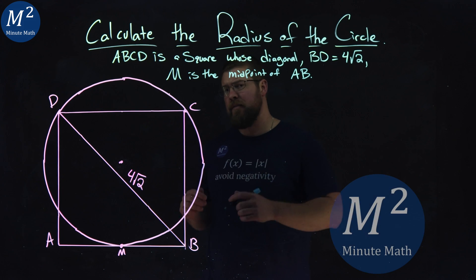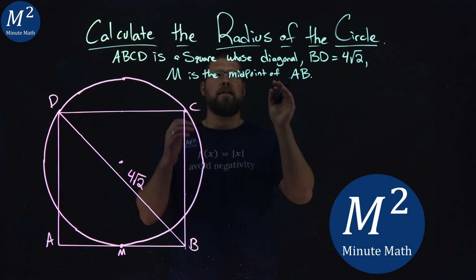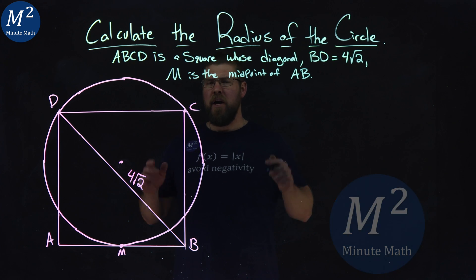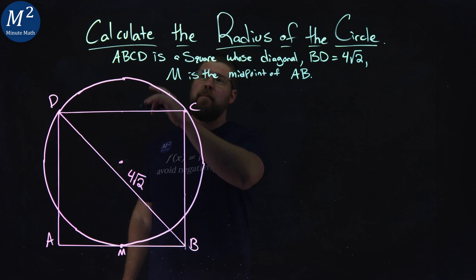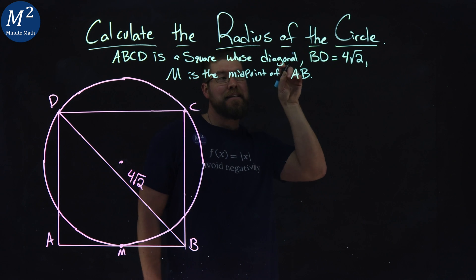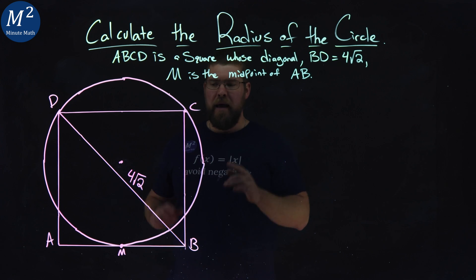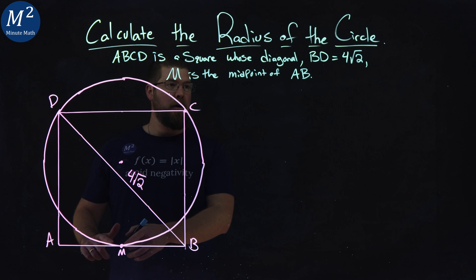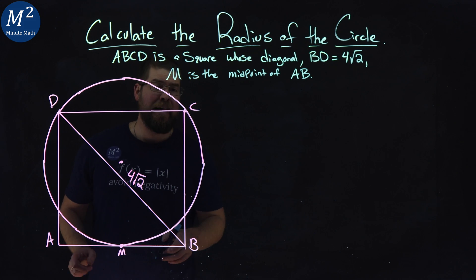Hi, I'm Sean Gannon and this is MinuteMath and we've got to calculate the radius of the circle. We're given some key information first. ABCD is a square, important, whose diagonal BD is equal to 4√2. M is the midpoint of the line segment AB.